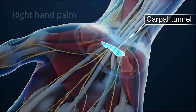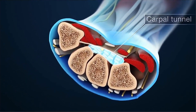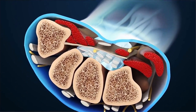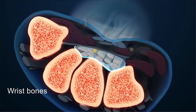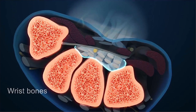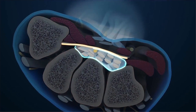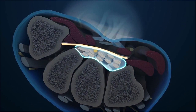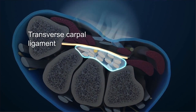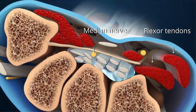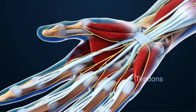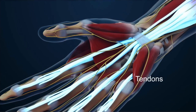The carpal tunnel is an anatomical structure in the wrist, formed by the wrist bones on the bottom and sides, and a strong fibrous ligament — the transverse carpal ligament — on top. It is a narrow passageway in the wrist through which several important structures pass, including tendons and the median nerve.